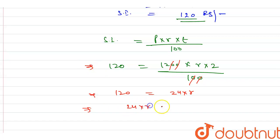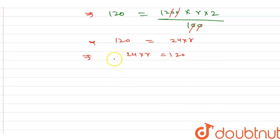From here we can write R equals 120 upon 24. When you divide 120 by 24, this is 24 into 5 equals 120, so R will be 5 percent.